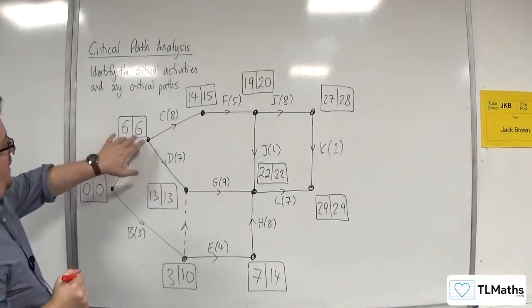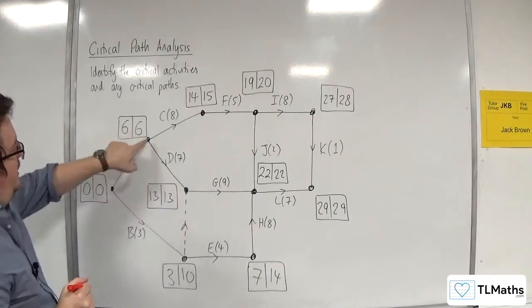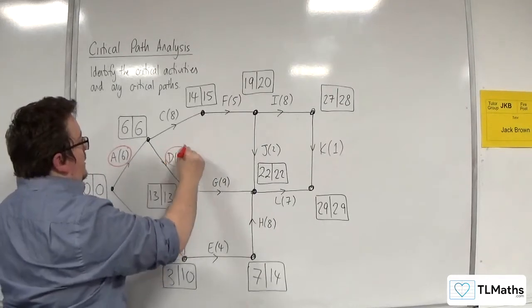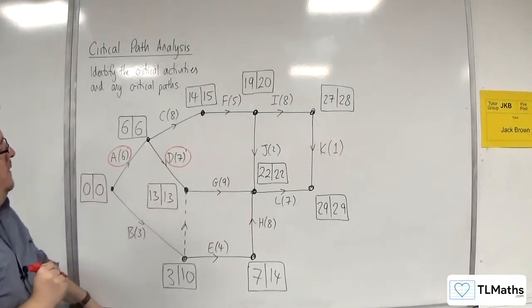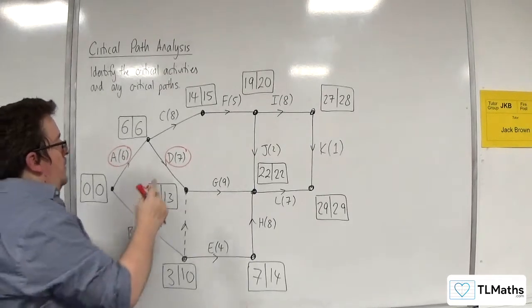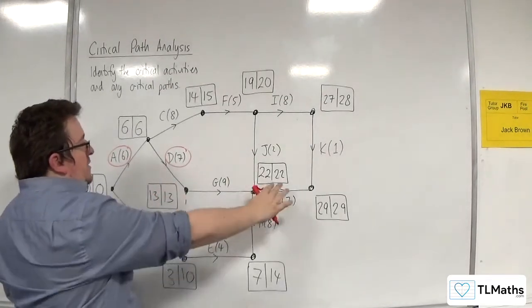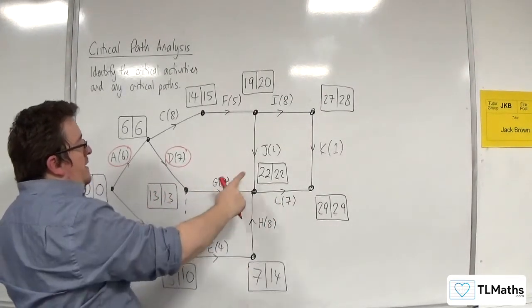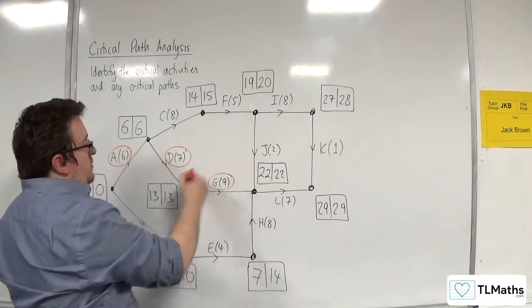Then we've got 6, 6 and 13, 13. 6 plus 7 is 13, so D is also critical. Then you've got 13, 13, 22, 22. 13 plus 9 is 22, so G is critical.